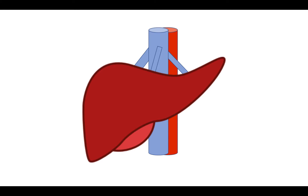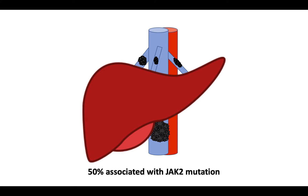Let's first discuss the underlying pathophysiology. The Budd-Chiari syndrome is defined as venous outflow tract obstruction. This often happens when there is partial or complete occlusion of the right hepatic vein, left hepatic vein, and/or middle hepatic vein. It also could happen with obstruction in the hepatic portion of the inferior vena cava. About 50% of cases will have an underlying myeloproliferative neoplasm with an associated JAK2 mutation.